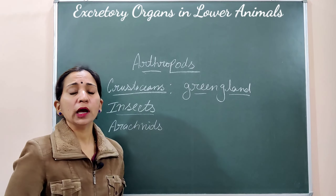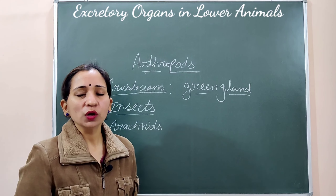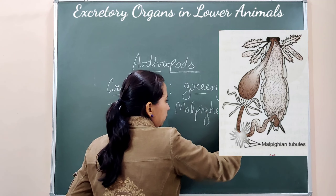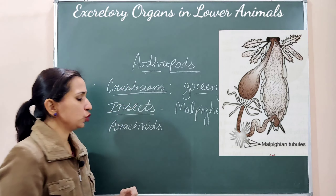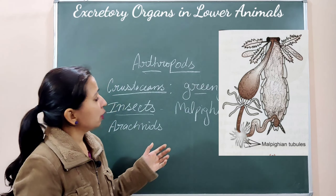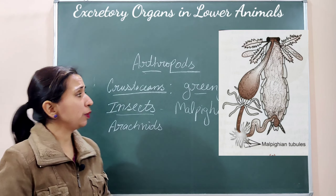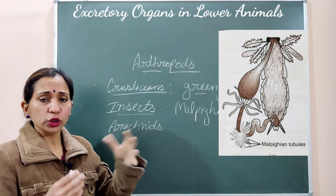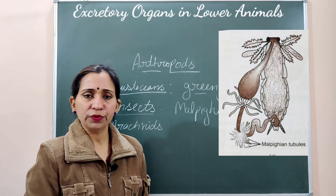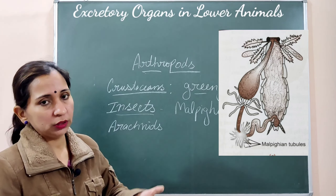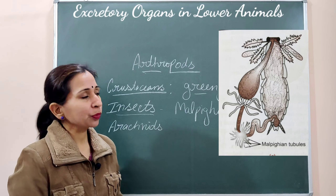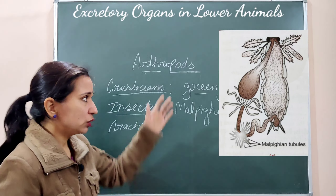The next group in Arthropoda is insects, mainly discussing the cockroach. In cockroaches the excretory organ is known as Malpighian tubules. These Malpighian tubules are found at the base of the midgut and at the juncture of the midgut and the hindgut. They are present alongside the digestive system and perform the function of excretion. They extract fluid from the gut and from the hemolymph — since cockroaches have an open circulatory system with hemolymph — and then release the waste out.